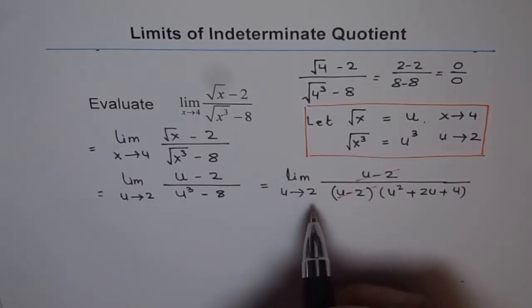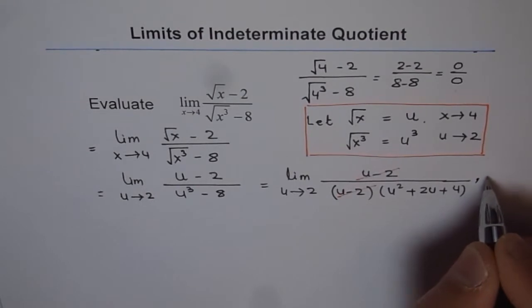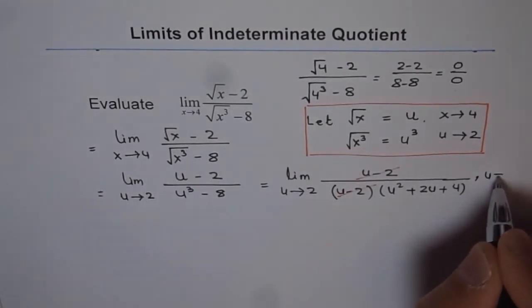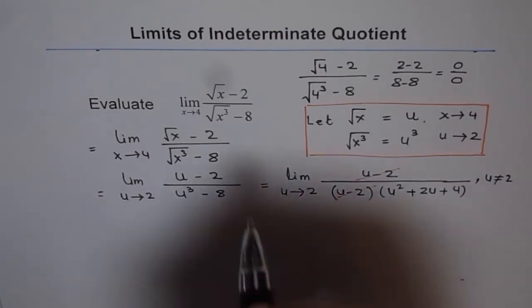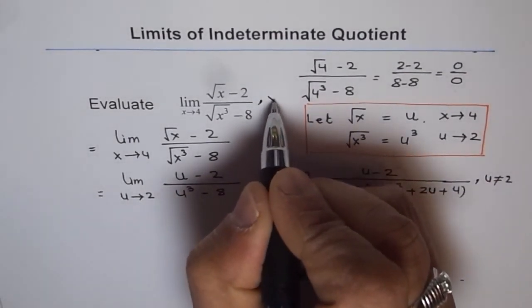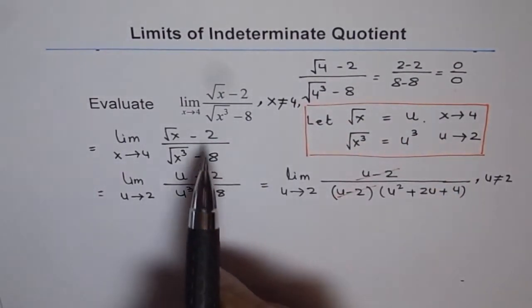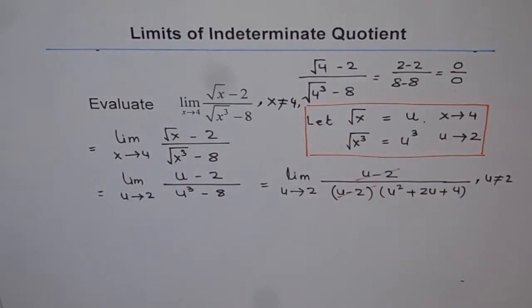Let me write here that u is not equal to 2. In a way, I should write here x is not equal to 4 here, since if I plug in 4 here, the denominator becomes 0, as you can see.